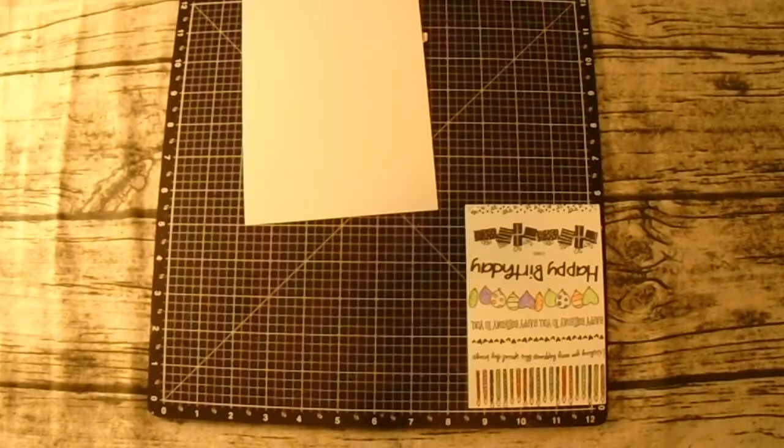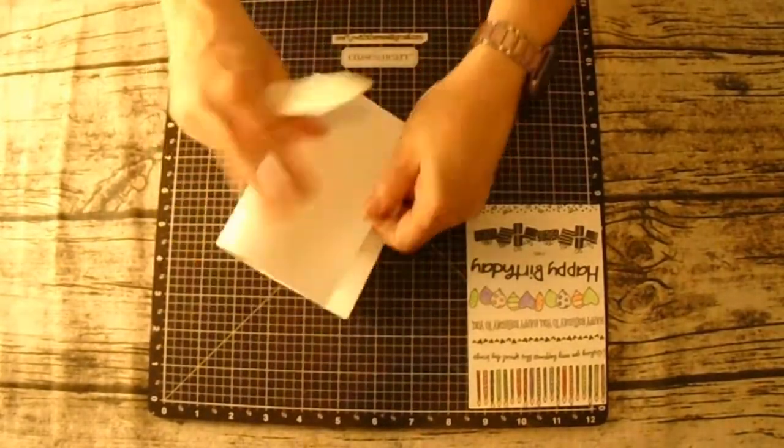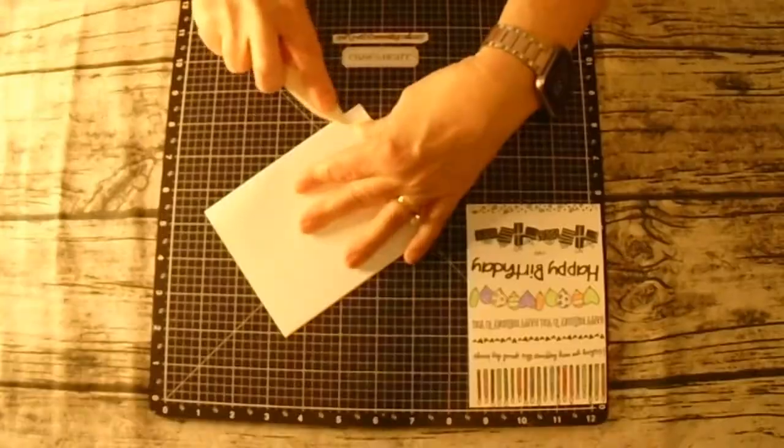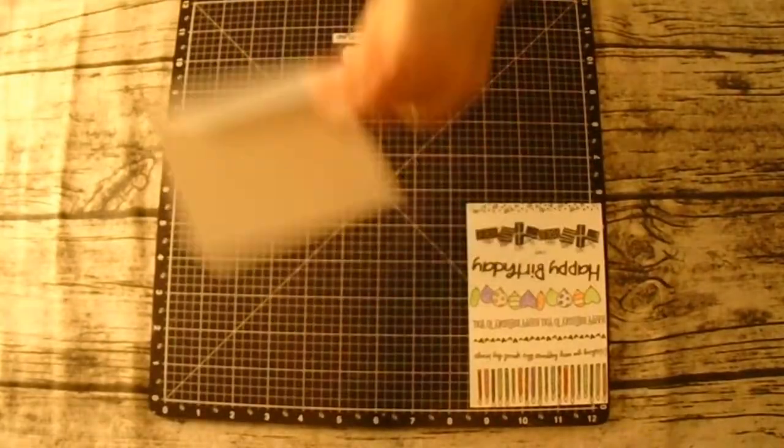Here I'm going to put together the card itself. I cut that five and a half by eight and a half and then scored it at four and a quarter.